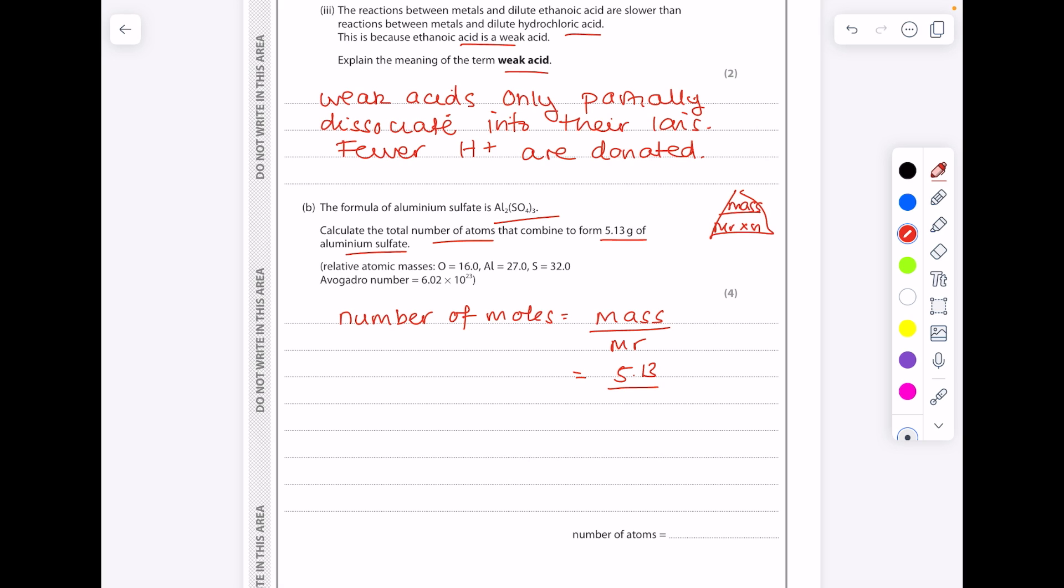Now we need to find the MR of aluminium sulphate using these numbers here. So we do 2 lots of 27 plus 3 lots of sulphur which is 32, plus 12 lots of oxygen. So our number of moles is 0.015.